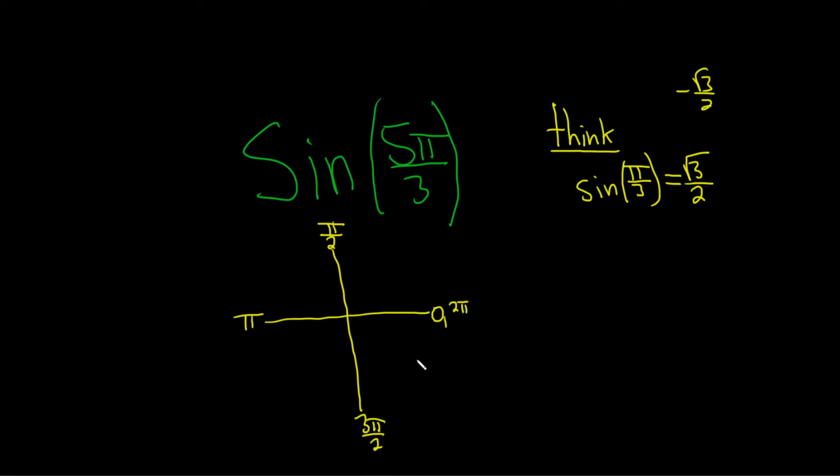What I like to do to figure out where it is is I think of π and 2π as numbers over 3, because there's a 3 here. So π is 3π/3, and then 2π is 6π/3.